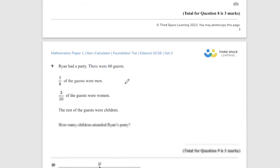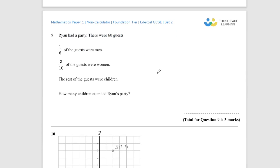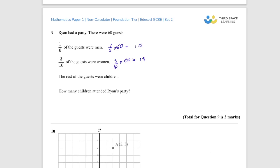Question 9. Ryan has a party. There were 60 guests. One sixth of the guests were men. Three tenths of the guests were women. The rest of the guests were children. How many children attended Ryan's party? If we do it like this, one sixth times by 60 is going to give you, well, 60 divided by 6 would give you 10. So we've got 10 men. We've got 3 tenths times by 60 is going to be equal to 18. So we've got a total, the rest of the guests are children. So that would be 60 minus 10 plus 18. That's going to be 60 minus 28, which is going to give us 32.